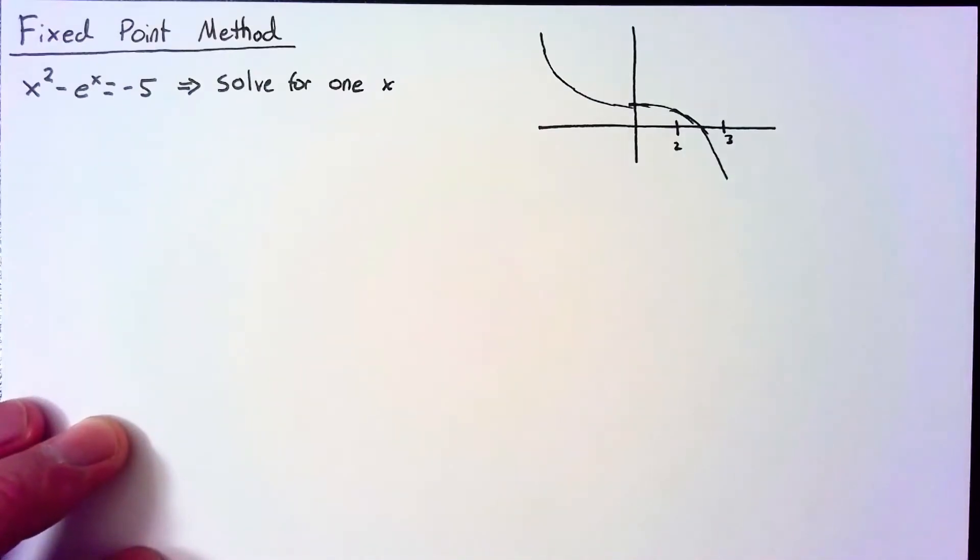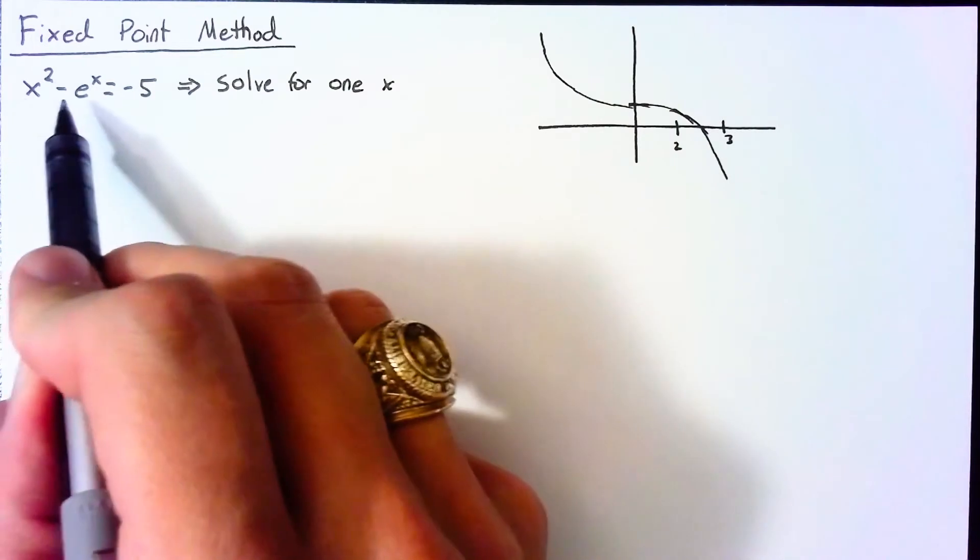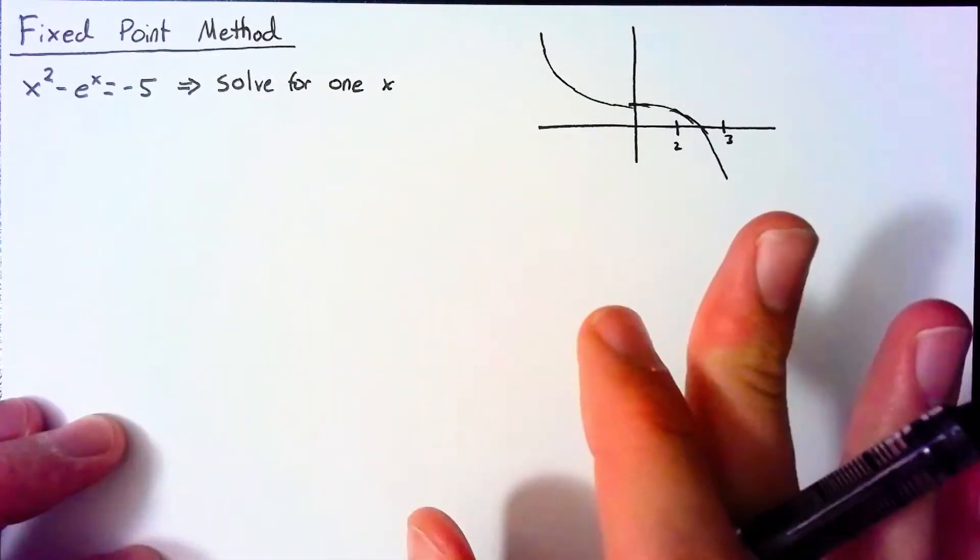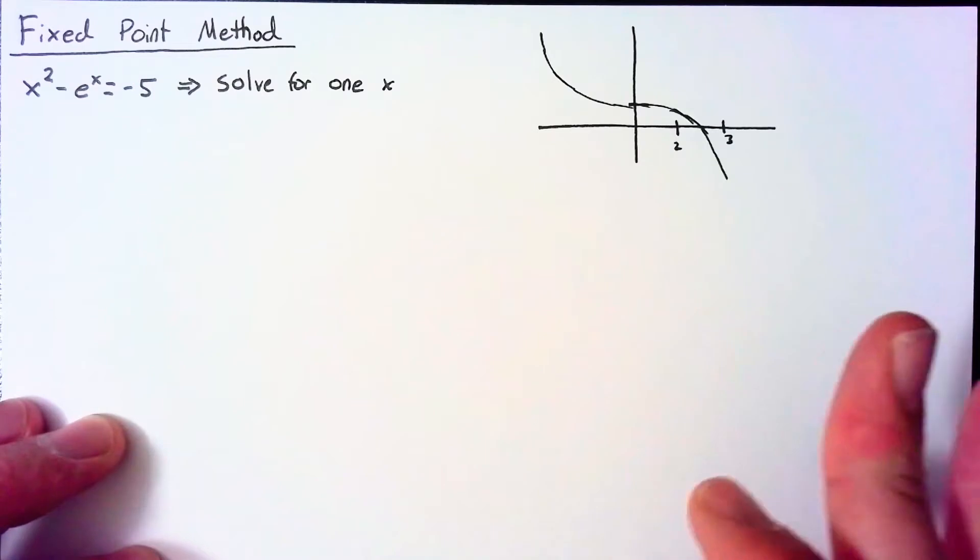We're going to take this equation that we're trying to solve and we're going to solve just for one of our x's. So what I mean for that is I'm going to choose an x in here, I'm going to isolate that x. I'm still going to have x's on the right hand side, but I'm still just going to call that good.